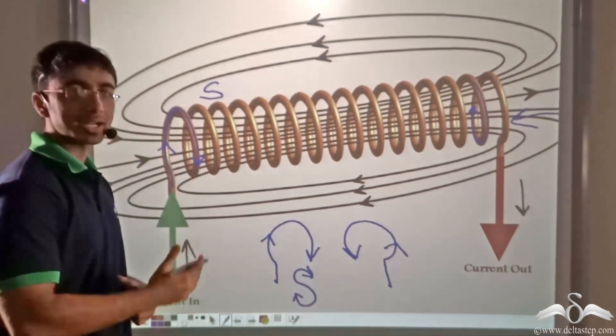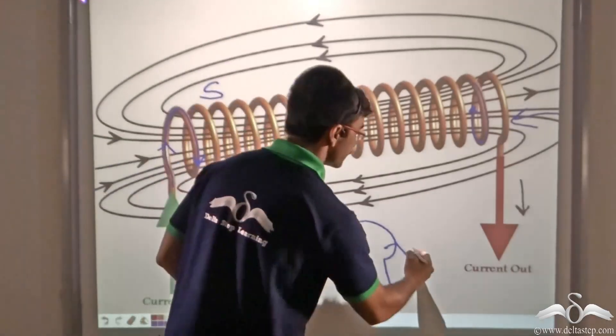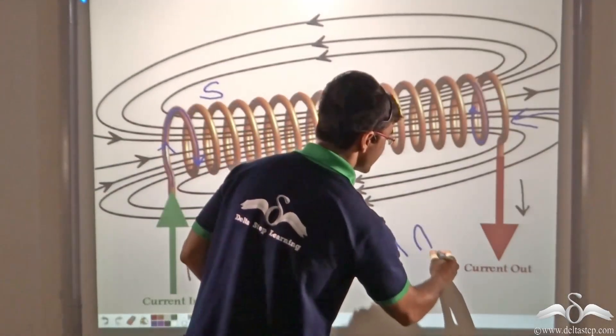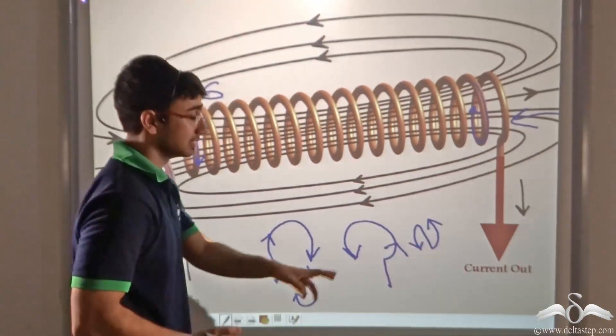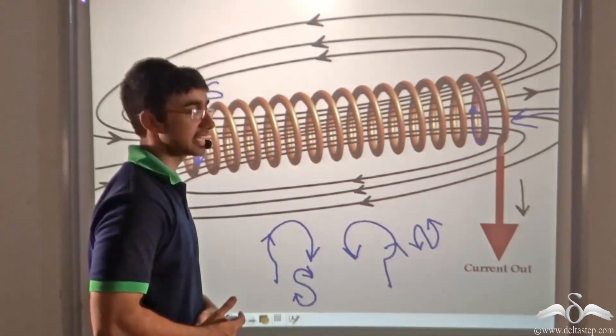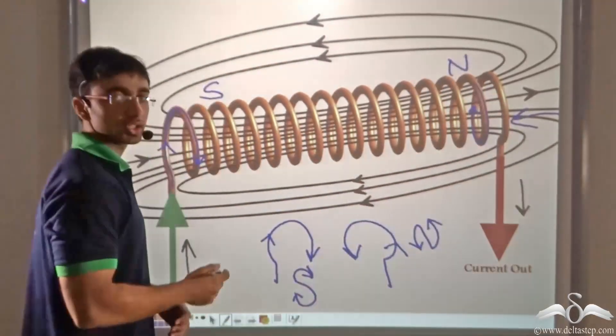Now what had we studied about anticlockwise direction of current in a circular loop? We had found that if we consider the letter N and place two arrows at both ends, this indicates anticlockwise direction. So this is the north pole of the solenoid.